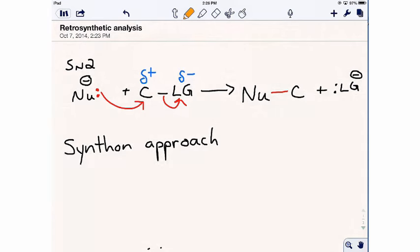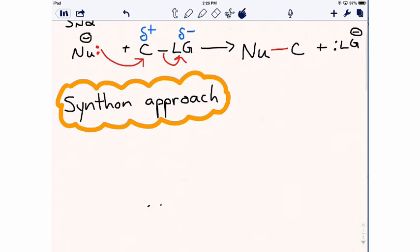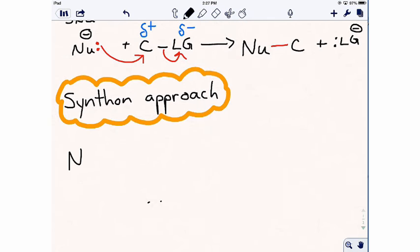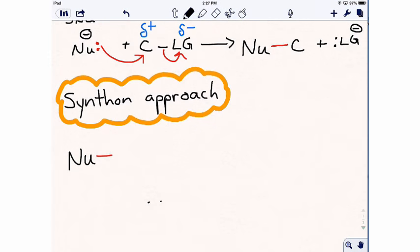Now let's analyze the reaction in reverse, a retrosynthetic analysis, which we depict using retrosynthetic arrows. We will use the synthon method to do this.